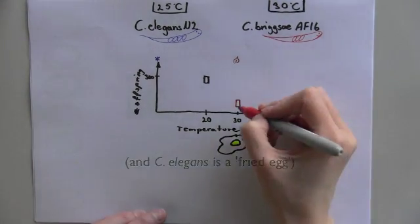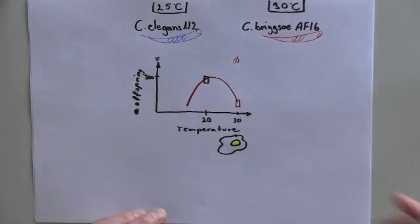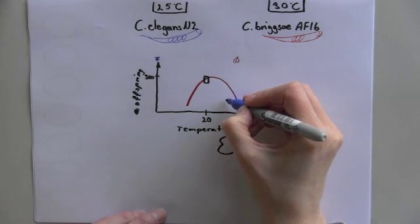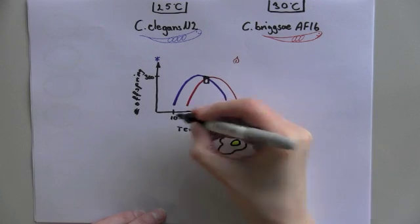We realized that we could only learn something about the thermal tolerance if we consider the full temperature range of the nematodes. Doing so, we learned that the fertility profile of C. briggsae was shifted to a higher temperature compared to that of C. elegans.